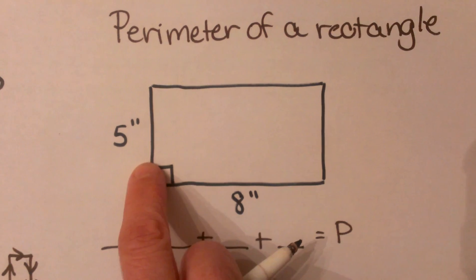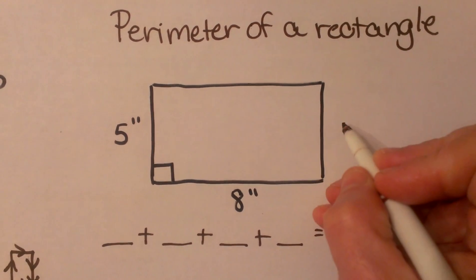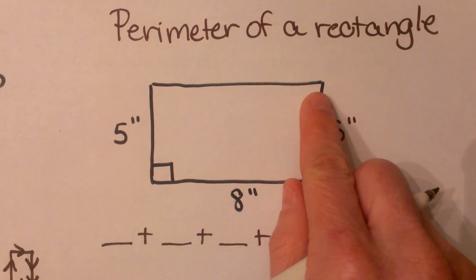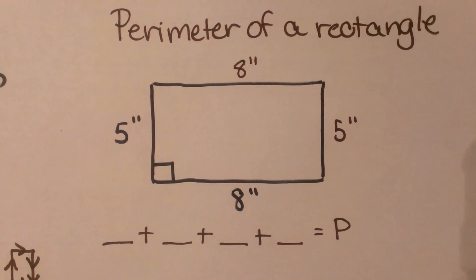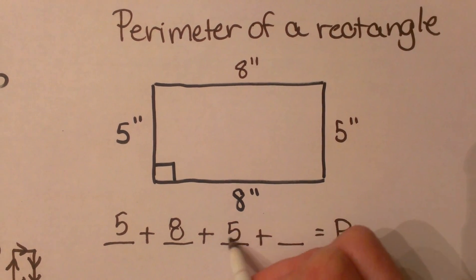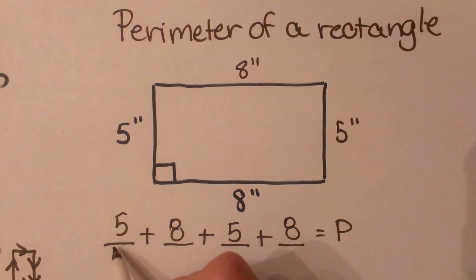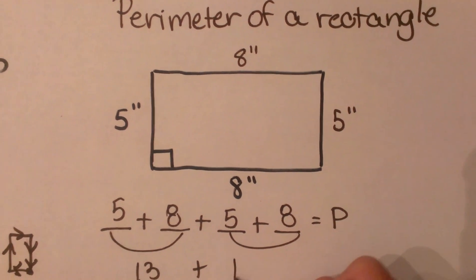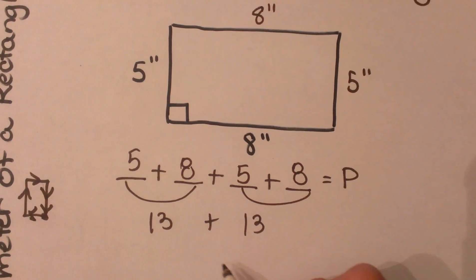We know if this side is 5, the opposite side must also be 5. And if the base is 8, the opposite side must also be 8. So now let's add them up: 5 plus 8 plus 5 plus 8. That gives us 13 plus 13, which is 26.